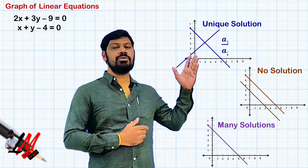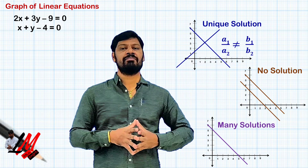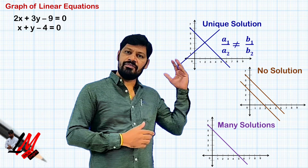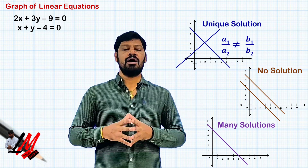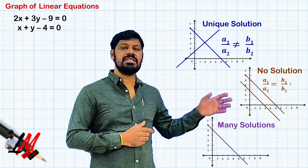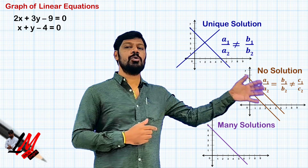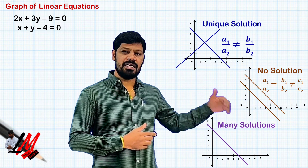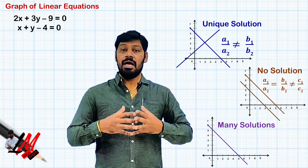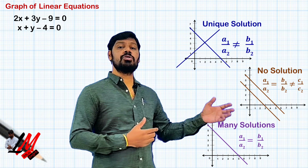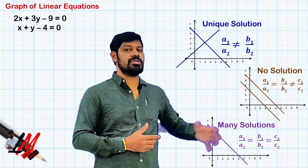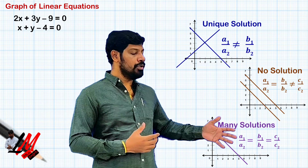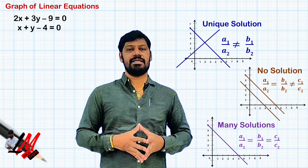If a1/a2 ≠ b1/b2, the system has a unique solution and we get intersecting lines. If a1/a2 = b1/b2 ≠ c1/c2, the system has no solution and we get parallel lines. If a1/a2 = b1/b2 = c1/c2, the system has many solutions and we get coincidental lines.